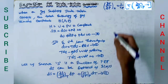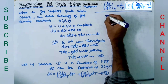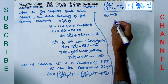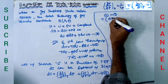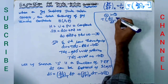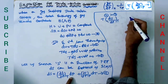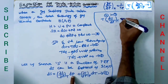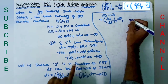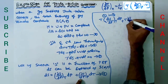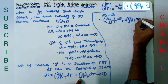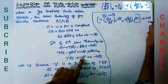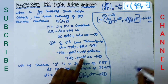Substituting equation 4 into equation 3, we get T times (∂S/∂P) at constant temperature times dP plus T times (∂S/∂T) at constant pressure times dT plus VdP equals zero. This is equation number 4.